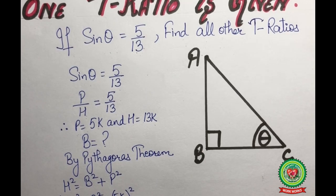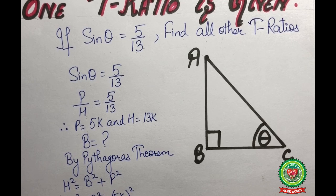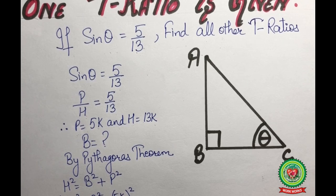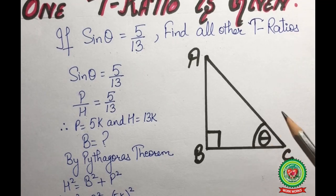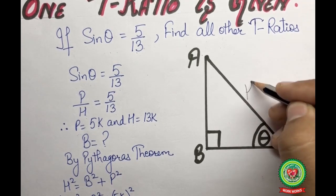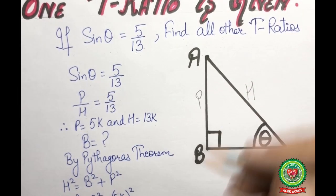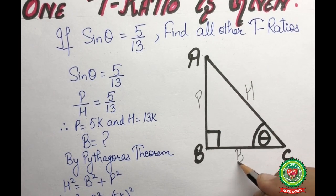To find all T-ratios we need all three sides of a right-angle triangle. We have two sides, so we will find the third using Pythagoras theorem. First, we draw a right-angle triangle ABC with the right angle at B and the reference angle at vertex C. Hypotenuse is the side opposite 90 degrees, so AC is the hypotenuse. AB is the perpendicular and BC is the base.